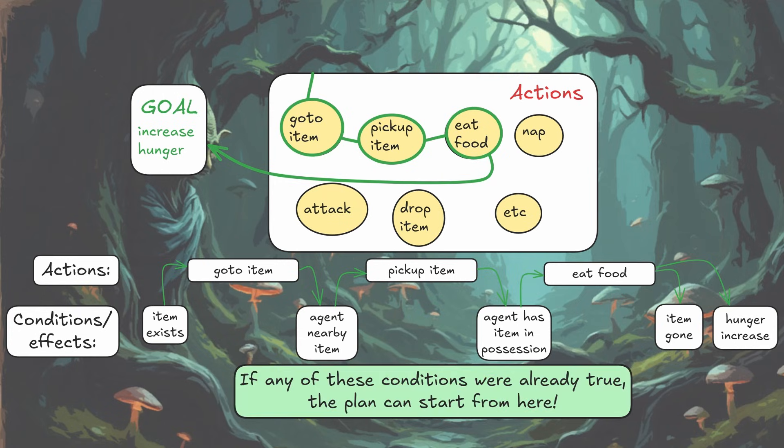If any of these conditions happen to already be true — say the agent was already holding something it can eat — the plan can just start from there. We don't have to go through the whole planning sequence. Starting from the goal, we'll find the shortest, most efficient plan, which typically means we do fewer actions because the agent has what it needs available to itself.